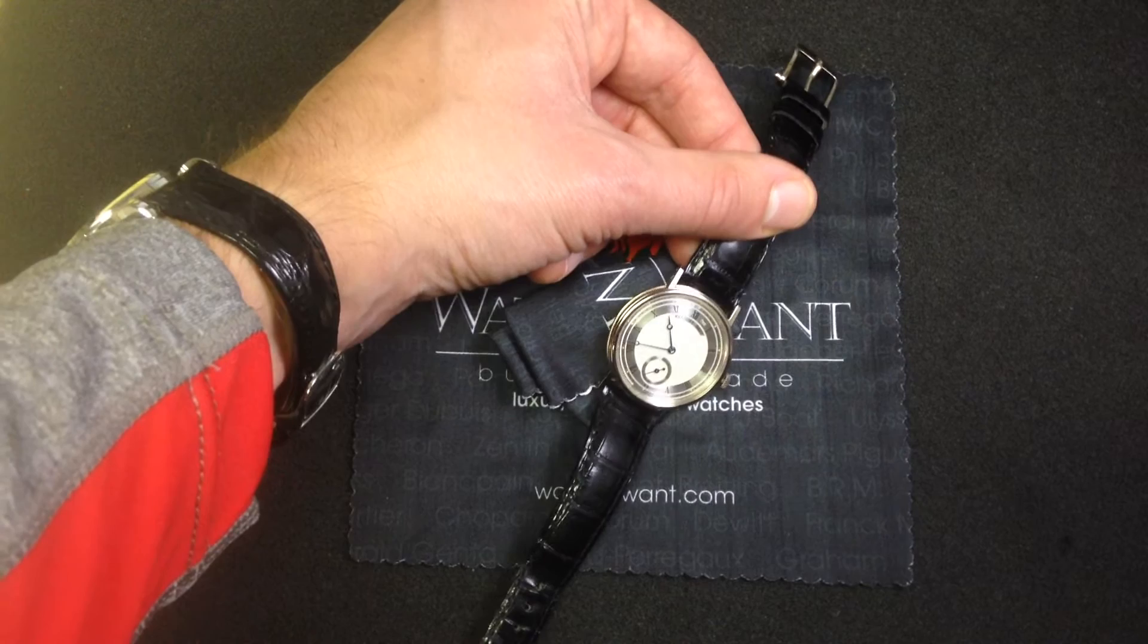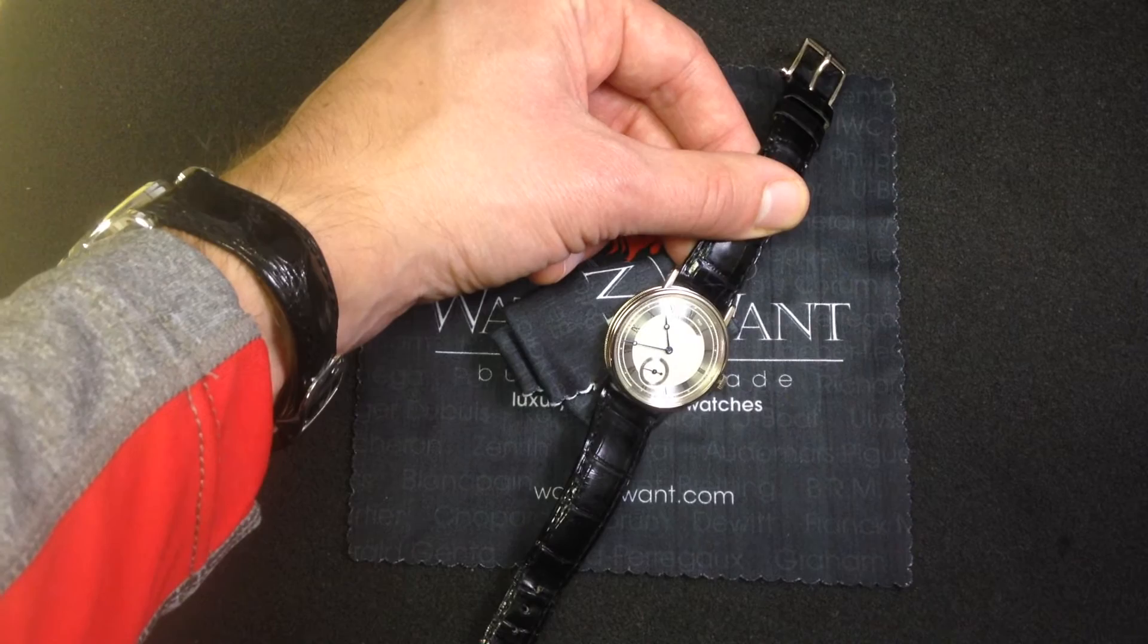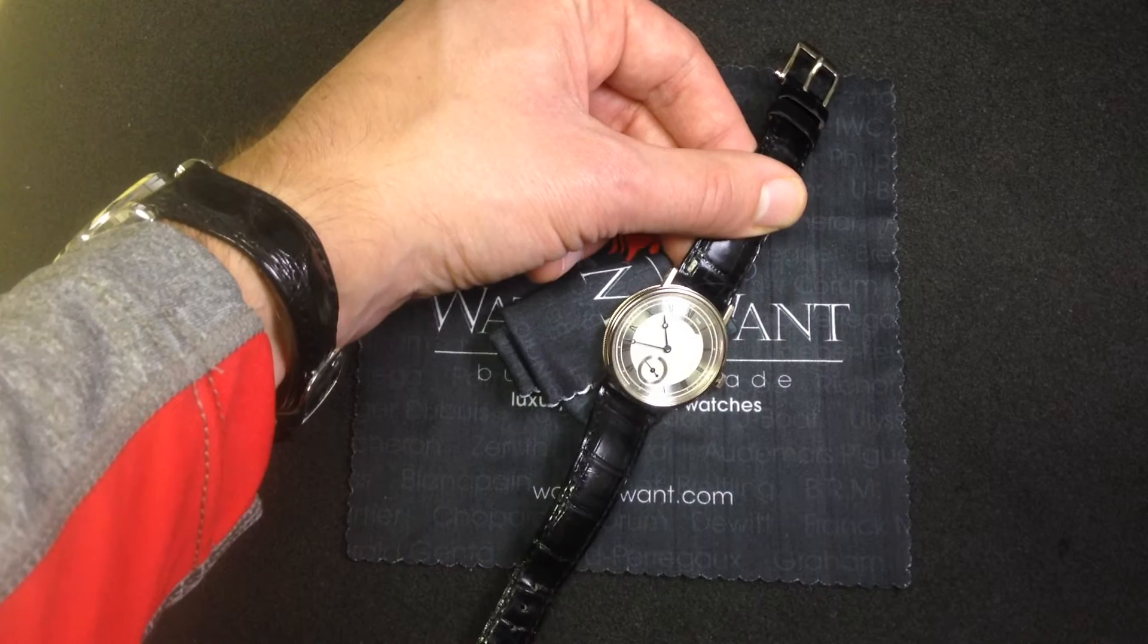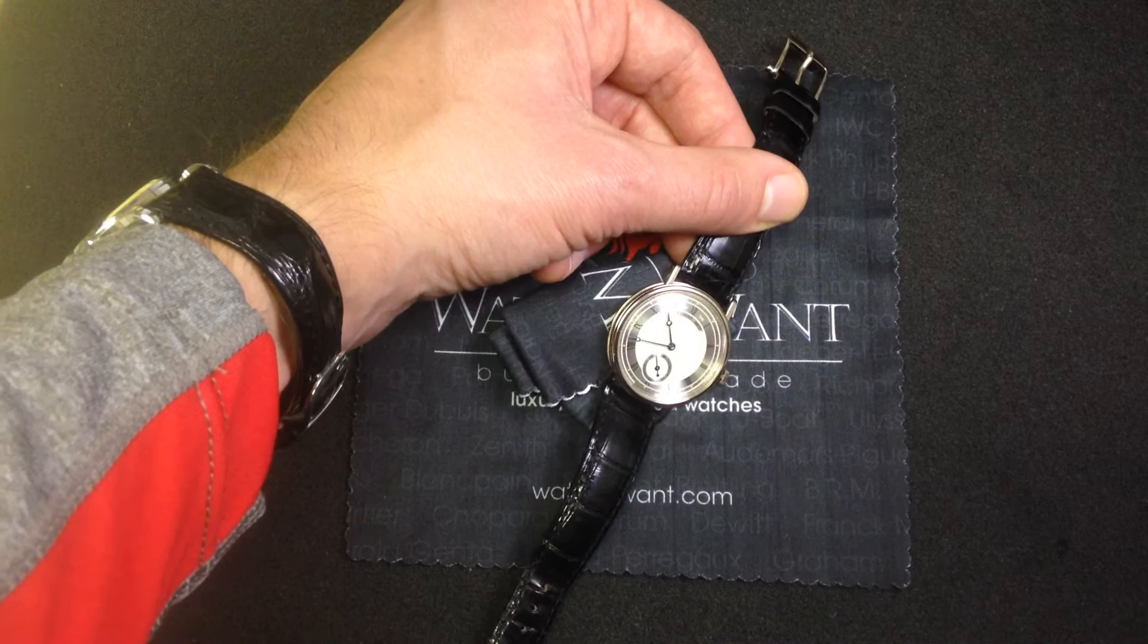This is the reference 5907, 18 carat white gold Classique. The Classique line incorporates traditional Breguet styling cues elaborated from the original pocket watches built by Abraham Louis Breguet himself in the 18th and 19th century.